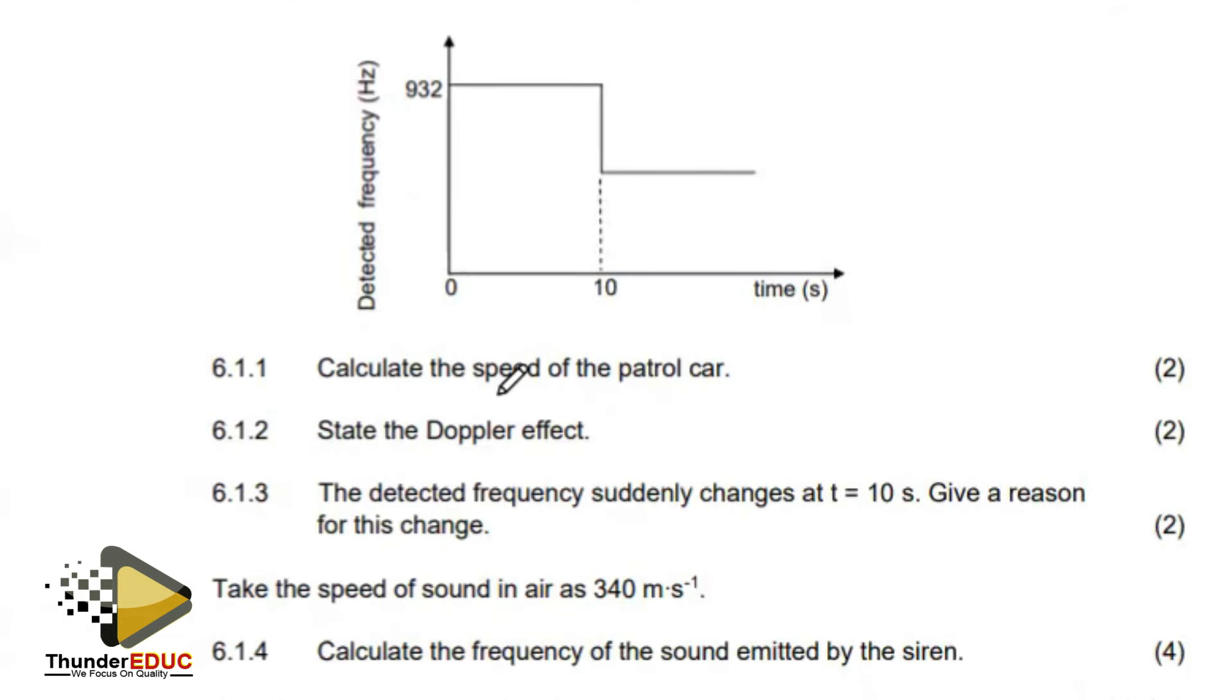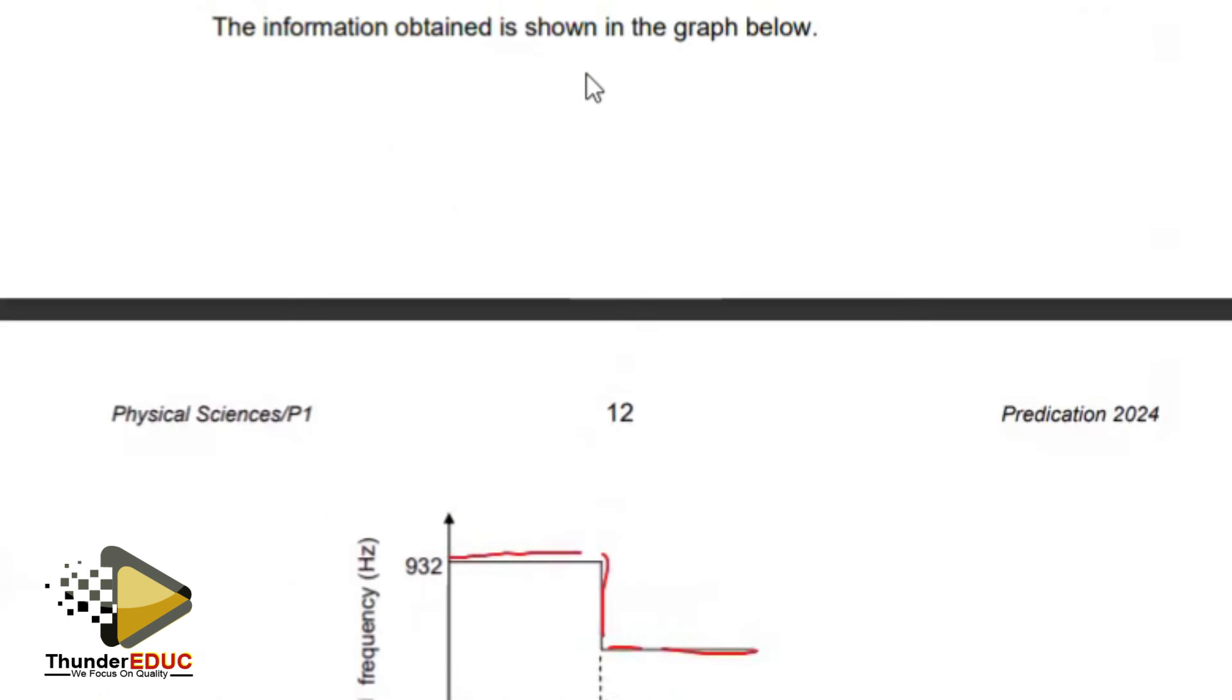This is interesting. So approaching, probably around, and then moves away. Does that make sense? Approaches, passes, moves away. All right, then they're asking us to calculate the velocity of the car.